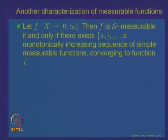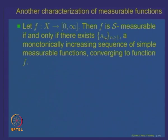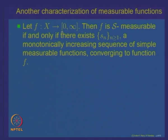Next, let us characterize measurable functions in terms of simple functions. We start with a non-negative function. Let f be a non-negative function defined on X taking values in [0, +∞). We want to show that f is measurable if and only if there exists a sequence Sn of non-negative simple measurable functions which are monotonically increasing, converging to f. That means f(x) = lim(n→∞) Sn(x) for every x, with the Sn's monotonically increasing.